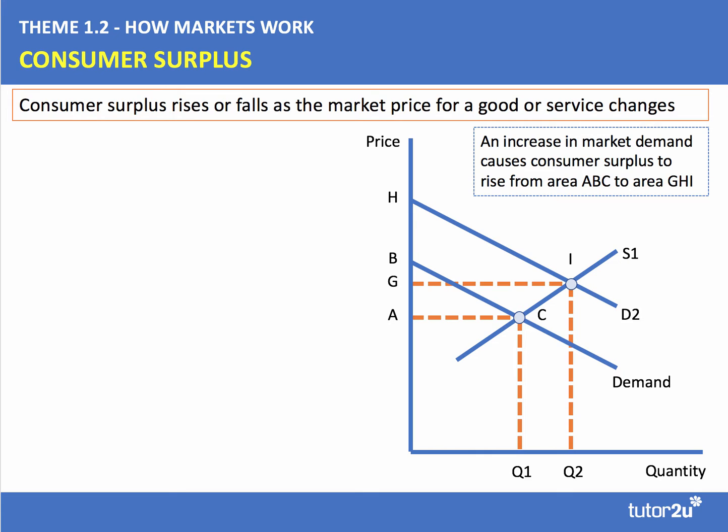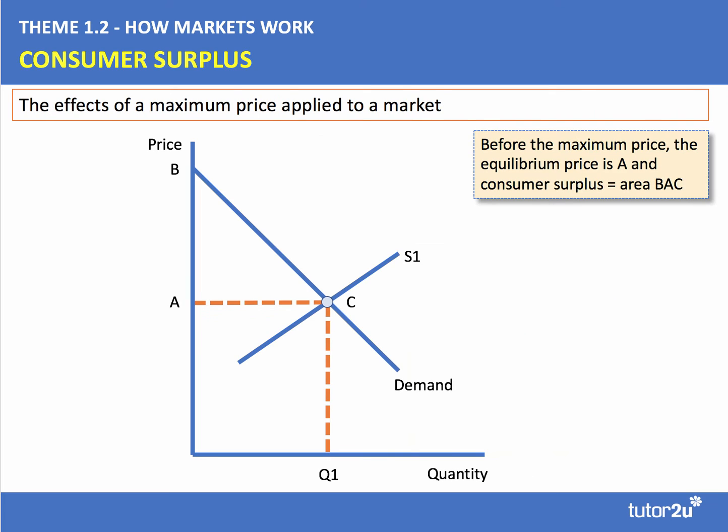Yes, the price goes up, but for some consumers the level of consumer surplus also rises in the market. One of the ways in which you can think about what happens to consumer welfare is if there's an intervention in the market. Let's look at one example — the effects of a maximum price applied to the market.